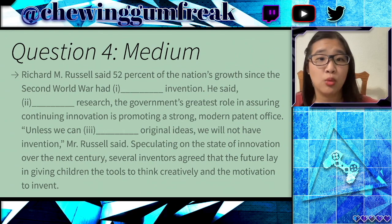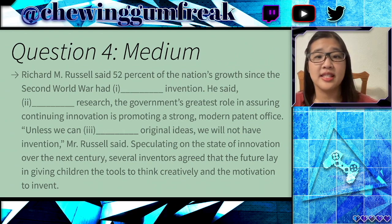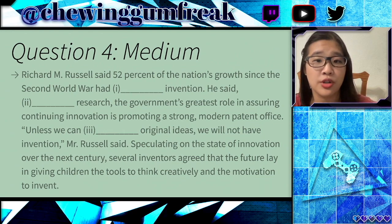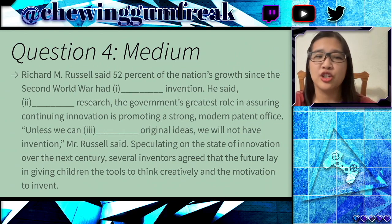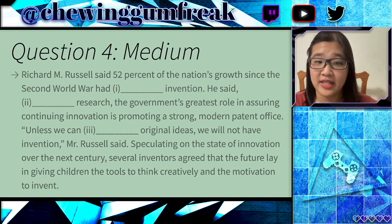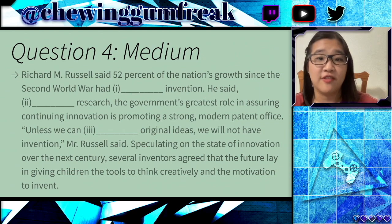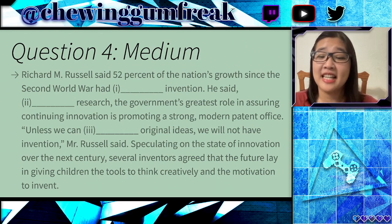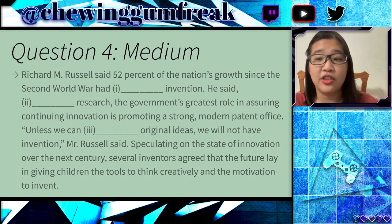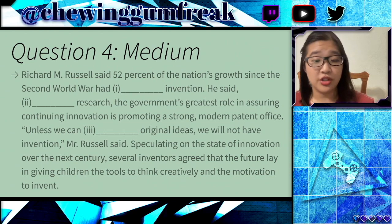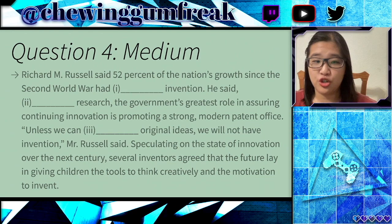This says: Richard M. Russell said 52% of the nation's growth since the Second World War had [blank] invention. He said [blank] research — the government's greatest role in assuring continuing innovation is promoting a strong modern patent office. Unless we can [blank] original ideas, we will not have invention, Mr. Russell said. Speculating on the state of innovation over the next century, several inventors agreed that the future lay in giving children the tools to think creatively and the motivation to invent.